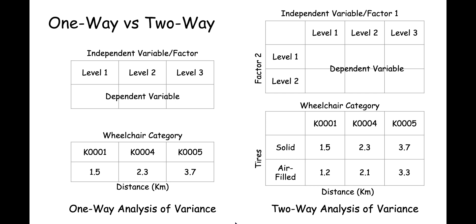Here's an example of a one-way and a two-way analysis of variance. On the left, we have the results table for a study that measured the average distance traveled each day by people who have three different kinds of wheelchairs. People who owned K1 wheelchairs — clunky heavy wheelchairs that hospitals and grocery stores use — move an average of 1.5 kilometers per day. People who owned K4 wheelchairs, which are lighter and more expensive, traveled an average of 2.3 kilometers per day. And people who owned K5 wheelchairs, which are ultra-lightweight wheelchairs with rigid frames, traveled an average of 3.7 kilometers per day.